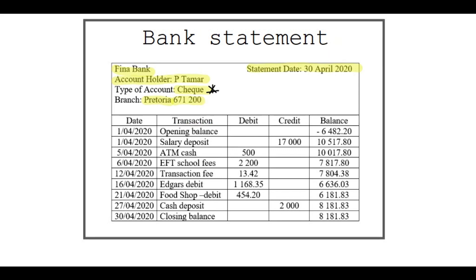A debit amount is a negative amount — that means you pay someone this, so you lose this money. It goes out of your account.